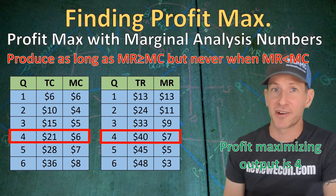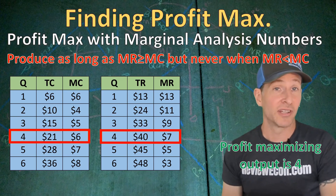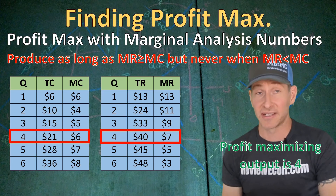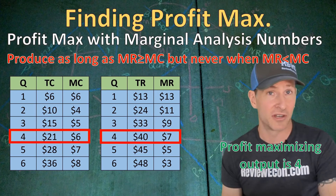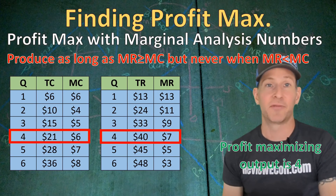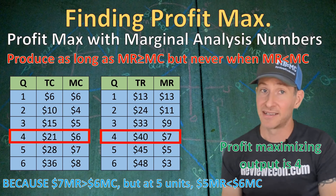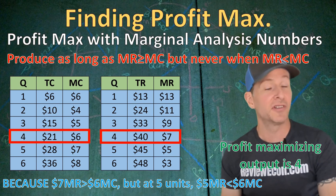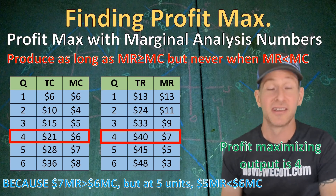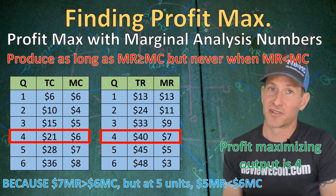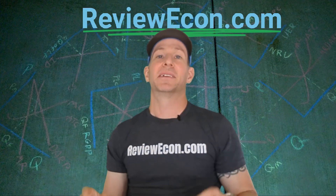On an AP Microeconomics FRQ, you would want to explain not only why the firm produces four units, but also why it does not produce the fifth. To explain: this firm produces four units because $7 of marginal revenue is greater than $6 of marginal cost; but at five units, $5 of marginal revenue is less than $6 of marginal cost.